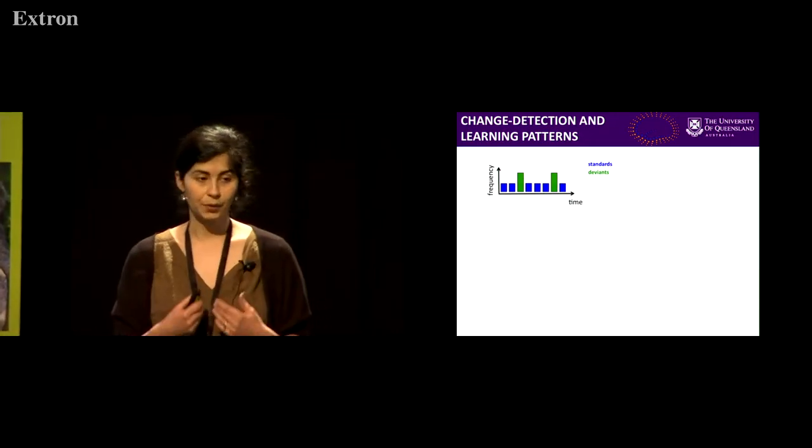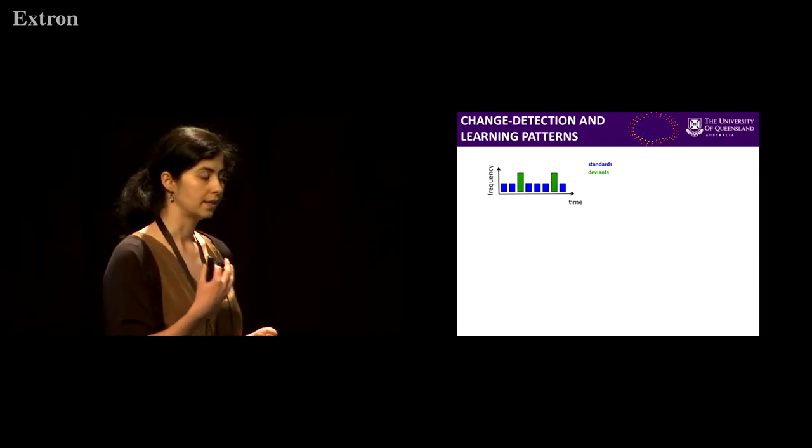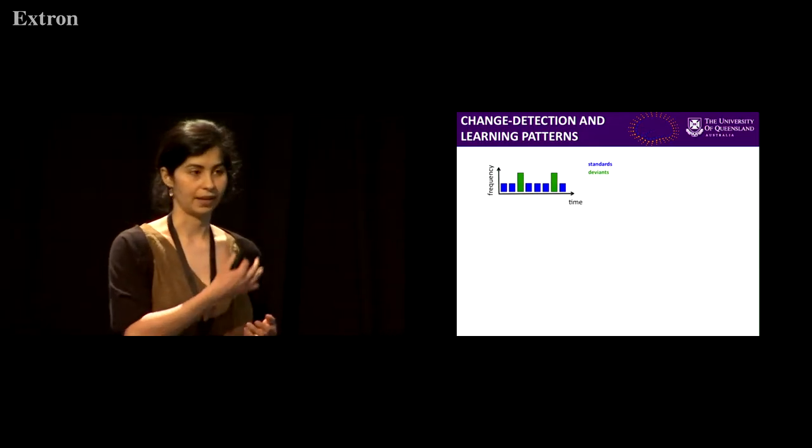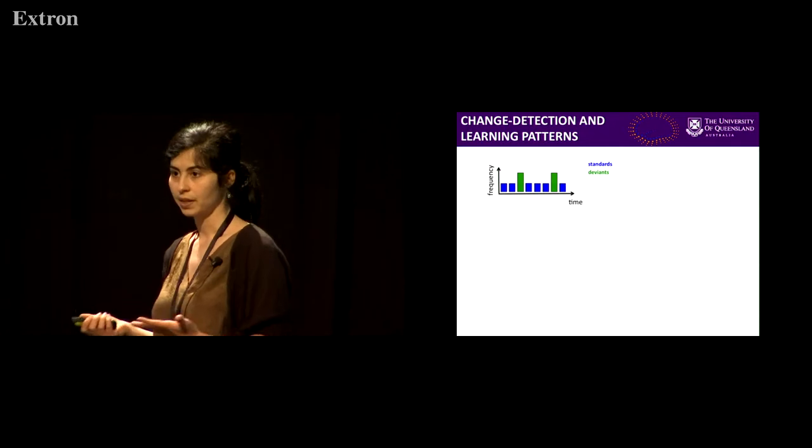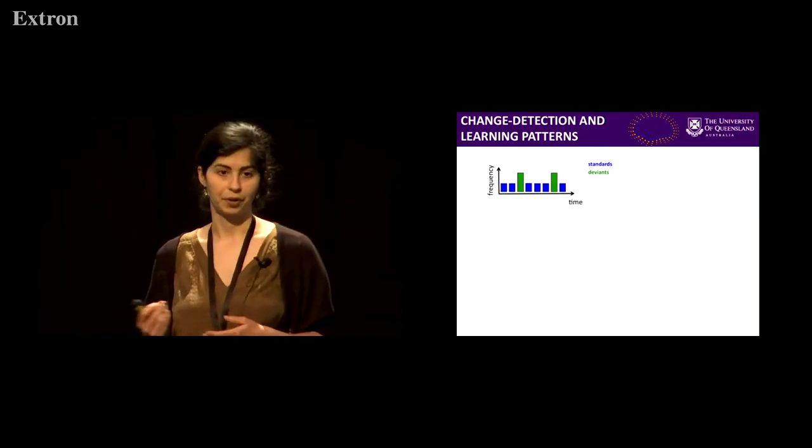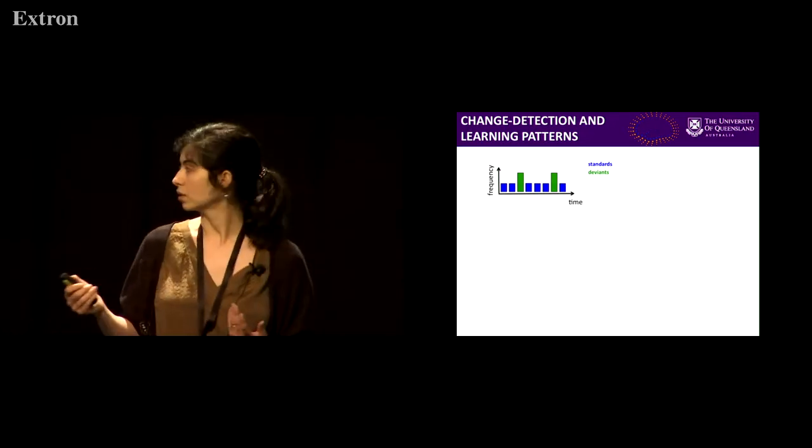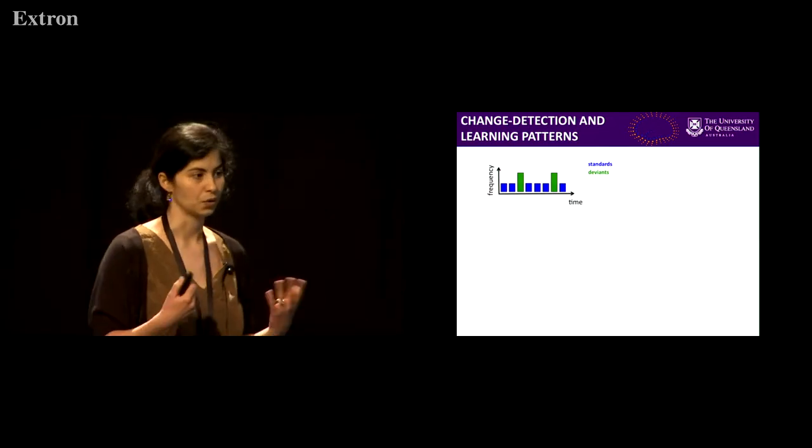We have a sequence of sounds that have a given frequency, and then once in a while we'll have sounds that deviate from this frequency. These are called deviant sounds or oddballs.